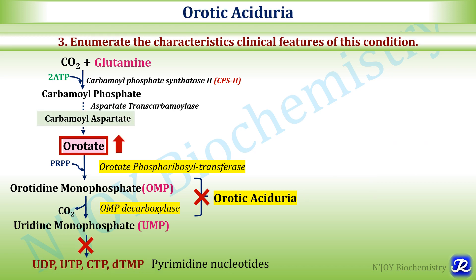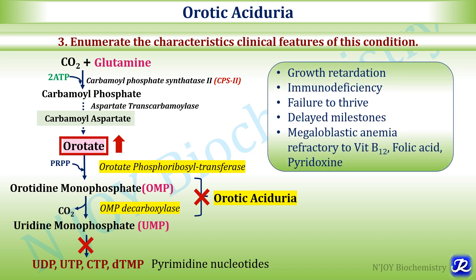The third question is: enumerate the characteristic clinical features of this condition. Due to deficiency of orotate phosphoribosyltransferase or OMP decarboxylase, there is increased orotate excreted in urine — orotic aciduria — and defective pyrimidine nucleotide biosynthesis. The clinical features are: growth retardation, immunodeficiency, failure to thrive, delayed milestones, and megaloblastic anemia which is refractory to vitamin B12, folic acid, and pyridoxine supplementation — meaning vitamin therapy has no effect in treating the megaloblastic anemia seen in orotic aciduria.